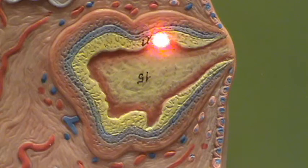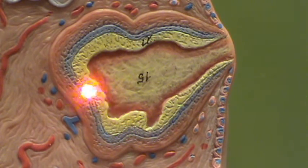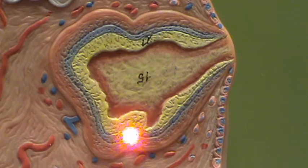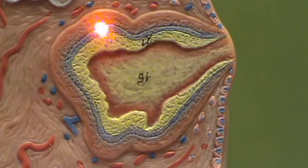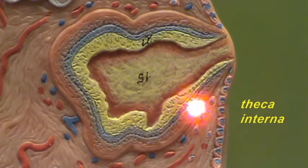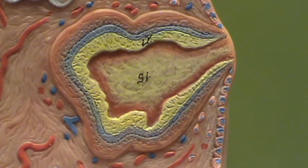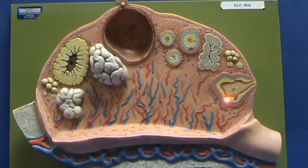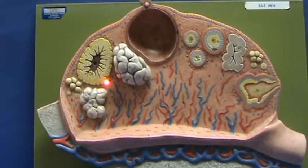This process by which the cells produce more steroid hormone is called luteinization, because the cells become more yellow in color. The theca interna cells also become more glandular — the blue you see here represents the cells of the theca interna, which are also producing more hormone. The cells of the theca externa are also depicted here.